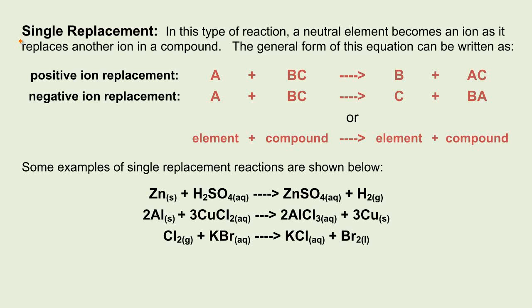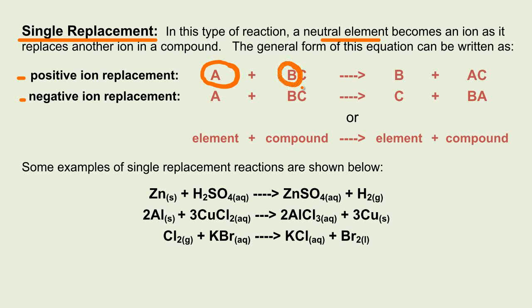In a single replacement, a neutral element becomes an ion as it replaces another ion in a compound. First we'll talk about the positive ion replacement, and then the negative ion replacement. On one side we have the positive ion, and over here we have the negative ion. So A is going to replace B, yielding B as a product and AC as the new compound.